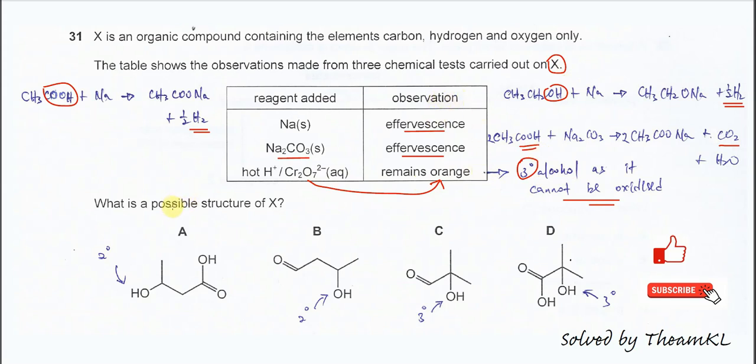For A, the alcohol that given is secondary. Secondary alcohol can be oxidized. That's why this one cannot be the answer. B, this alcohol also secondary alcohol. Can be oxidized. That's why this one not the answer.